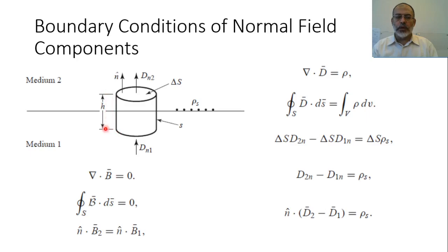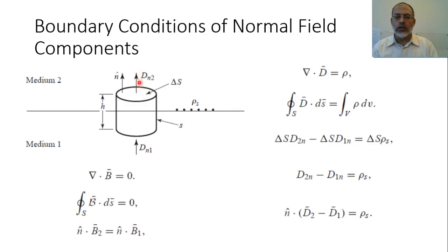The height H of this cylinder is tending to zero. The integration over the closed surface can be represented as the integration over the upper surface, plus the integration over the lower surface, plus the integration on the side surface. Because H tends to zero, the side surface contribution is assumed to vanish. So we are talking about the normal component of the electric flux density.